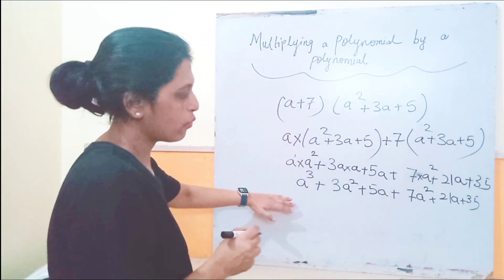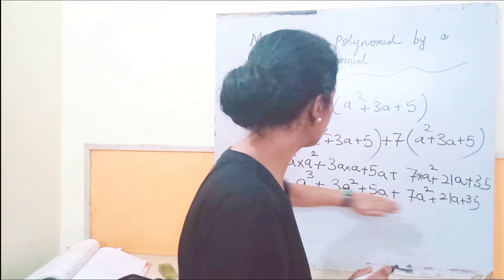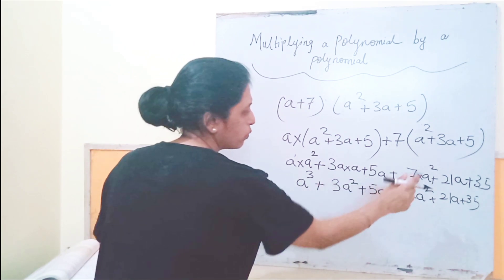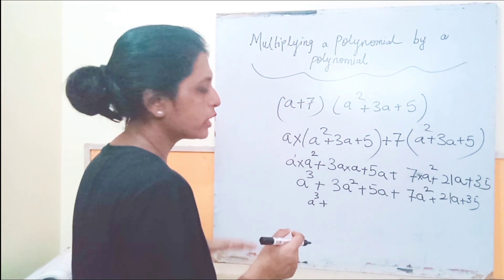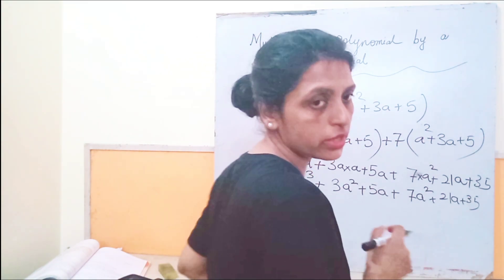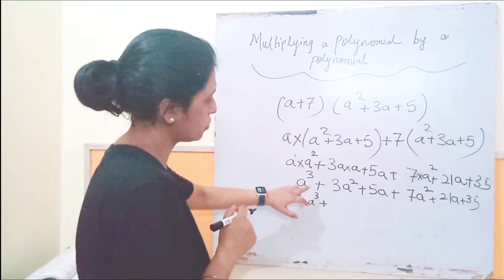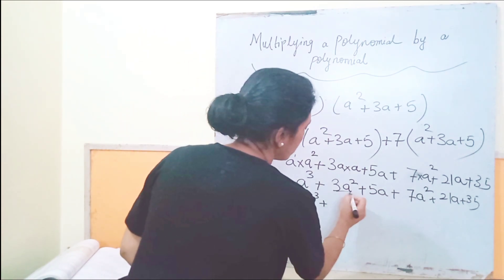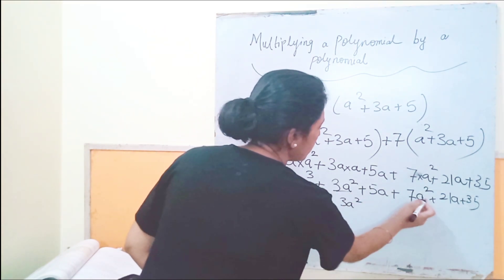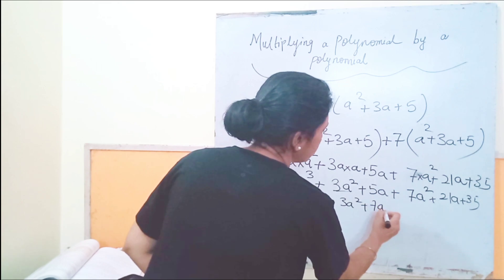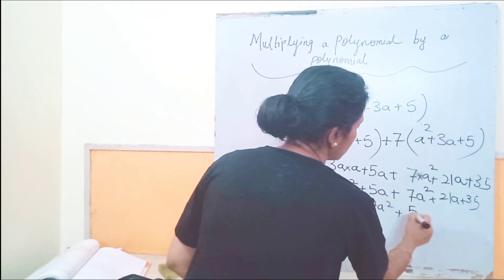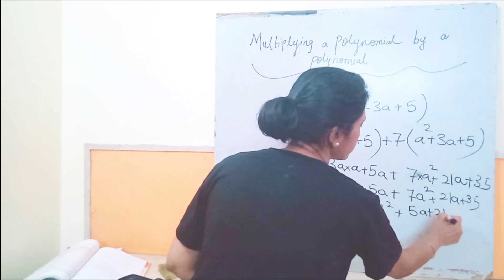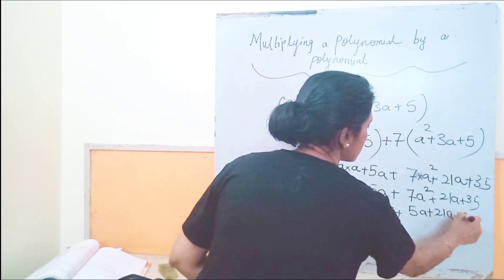Okay, now what we are going to do? We are going to arrange the like terms. A cubed terms are not there, so it will be, so we are going to arrange them in the decreasing power of the variables. So a cubed plus, now here 3a squared plus 7a squared, then 5a plus 21a